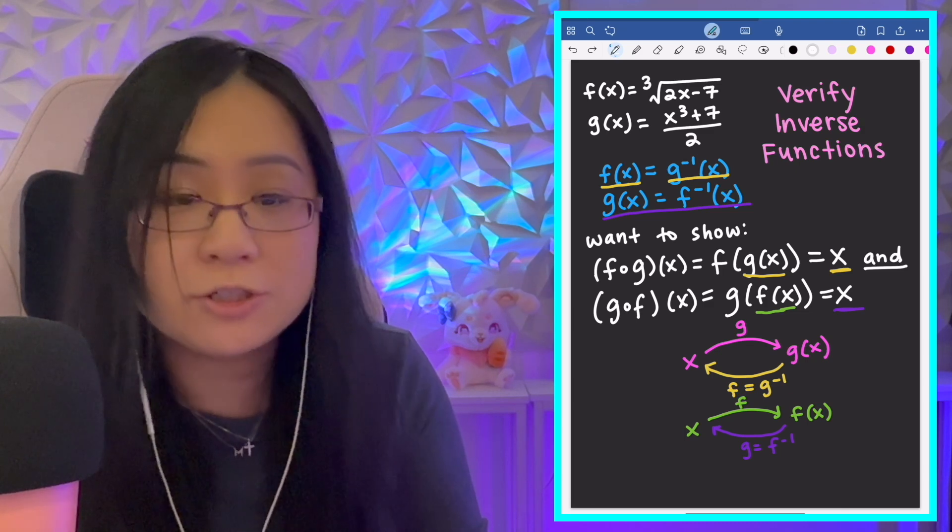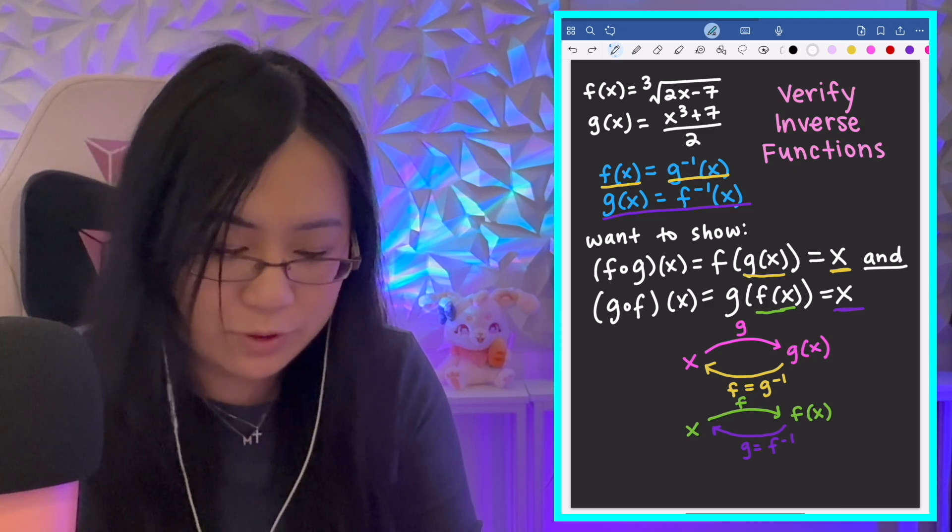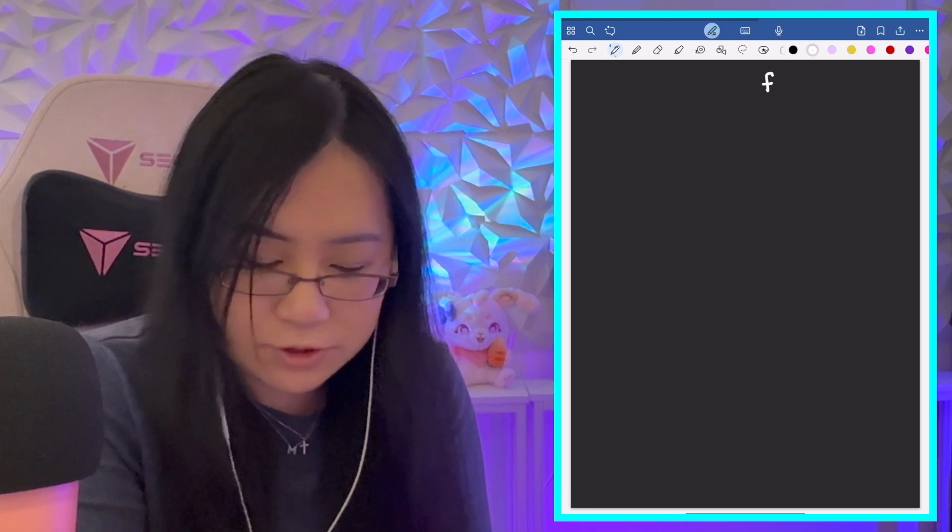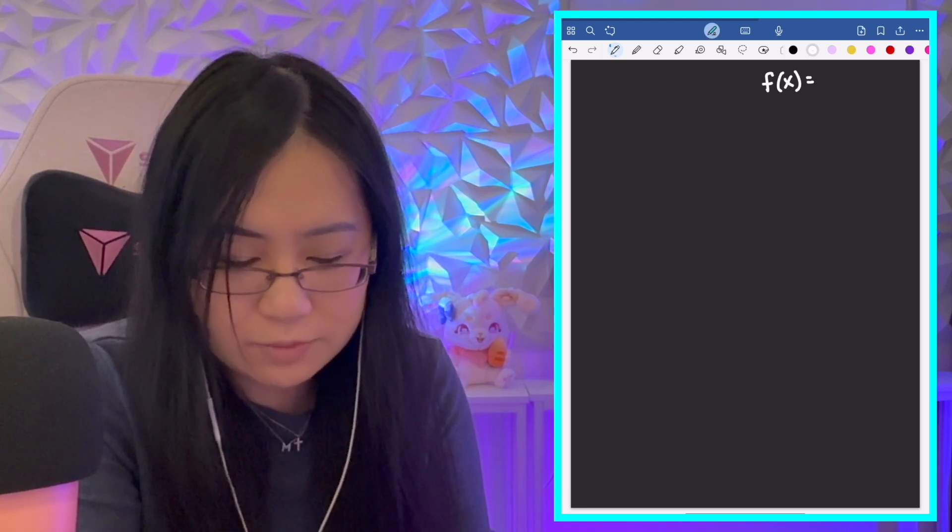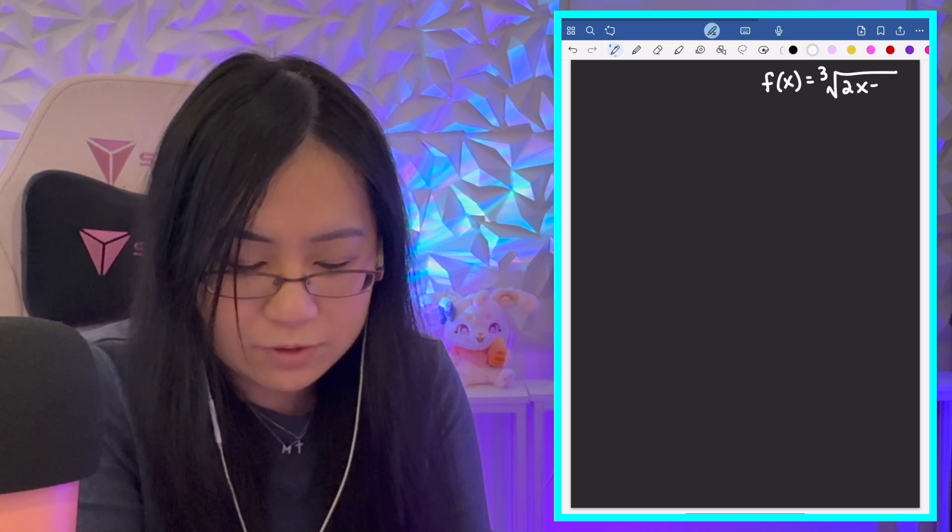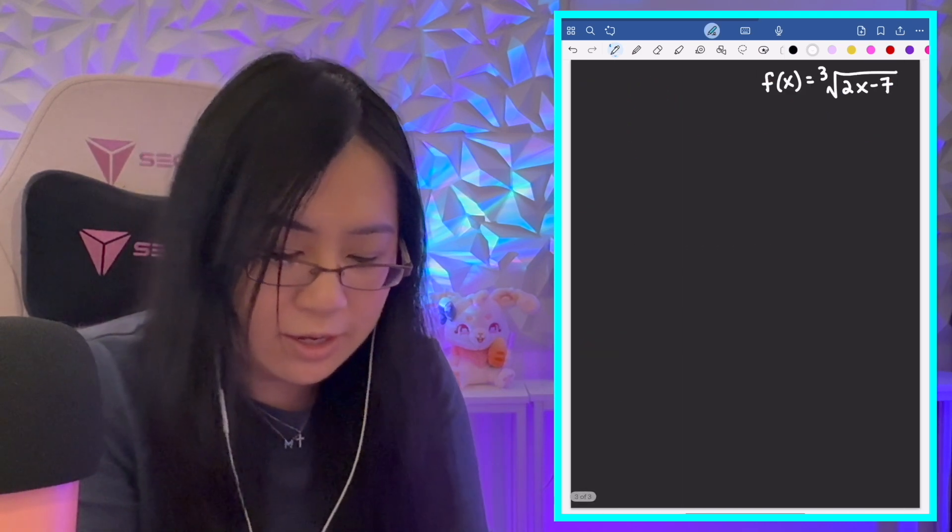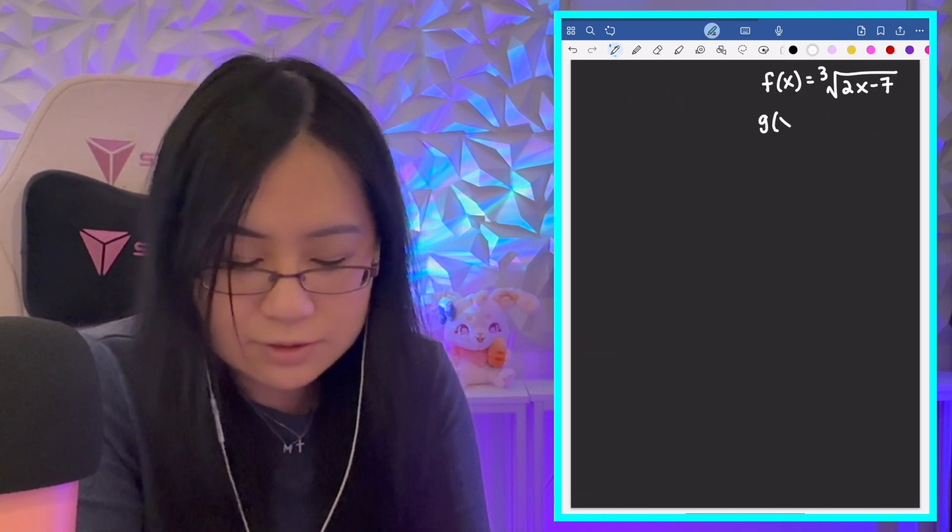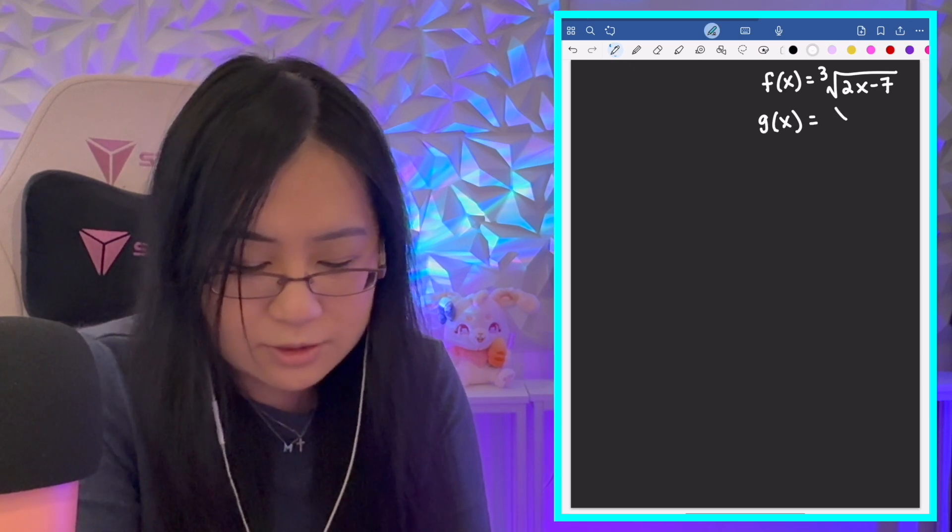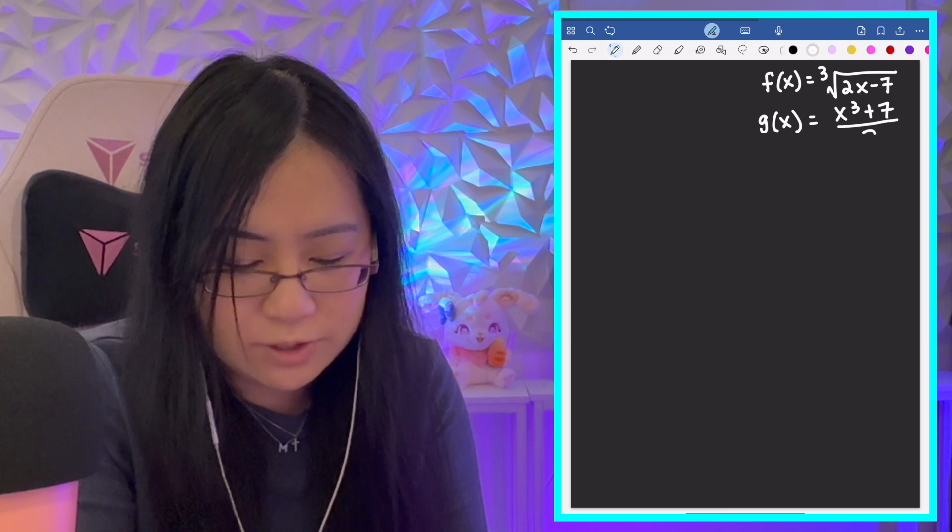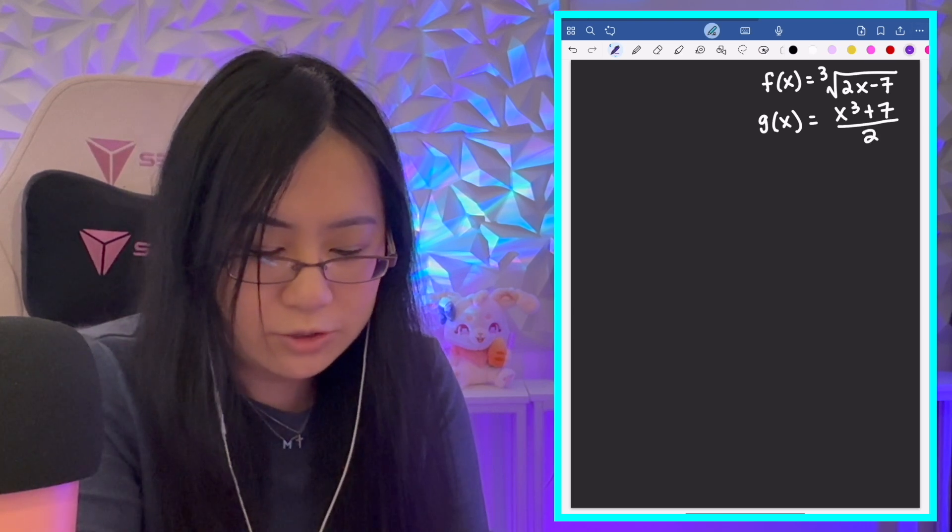Okay, so let's go ahead and just work out the actual algebra. I'm going to go ahead and rewrite the functions really quickly here so that we can see the pattern. So, the cube root of 2x minus 7 and g(x) equals x cubed plus 7 all over 2. So, these should undo each other.